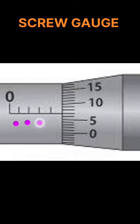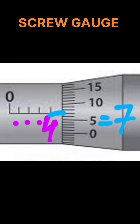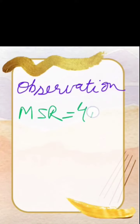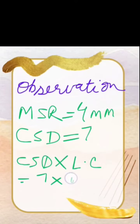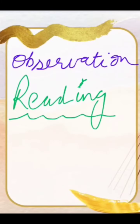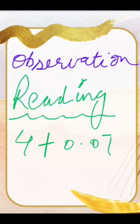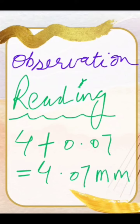Let us fix an object whose diameter is to be calculated. Once it is fixed, let us count the main scale reading — say it comes out to be 4 mm. Where the baseline intersects on the circular scale gives us the circular scale reading, and say it is 7. So 7 multiplied by the least count gives us the circular scale reading, that is 0.07 mm. So the complete reading is 4 mm plus 0.07 mm, giving us 4.07 mm as the external diameter of the object.